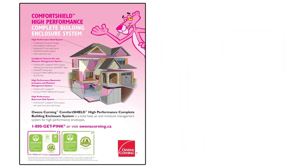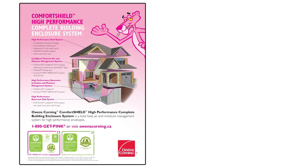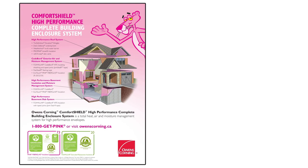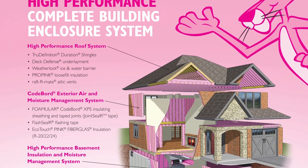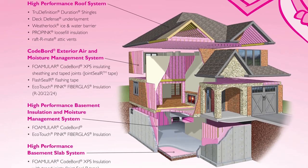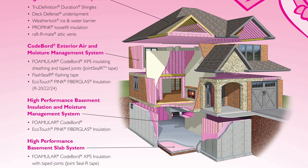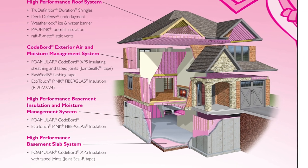The Owens Corning Comfort Shield High-Performance Complete Building Enclosure is a total heat, air, and moisture management system for high-performance envelopes. This includes roofing, basement, basement slab, and the code board exterior air and moisture management system.